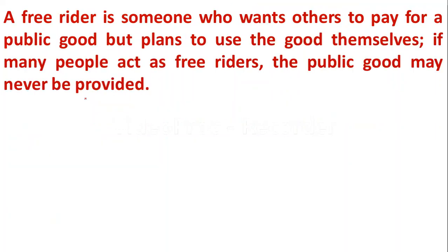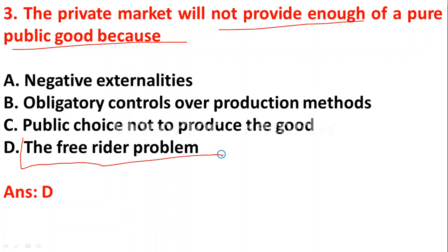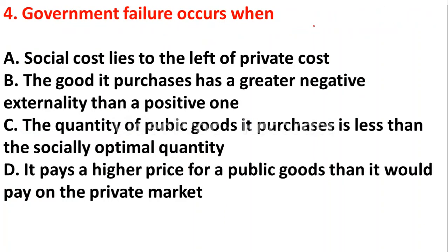A free rider is someone who wants others to pay for a public good but plans to use the good themselves — using the good without paying for it. Question 3: The private market will not provide enough of a pure public good because of: option D - the free rider problem. Because of the free rider problem, the private market will not provide enough public goods.